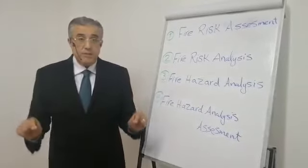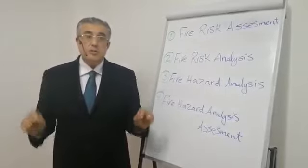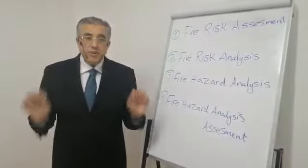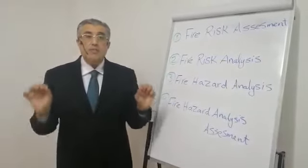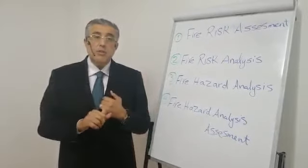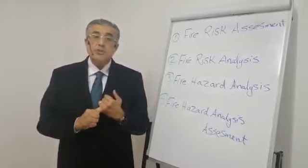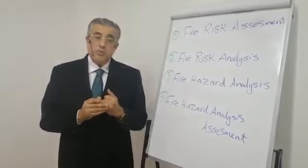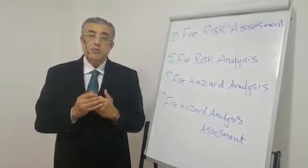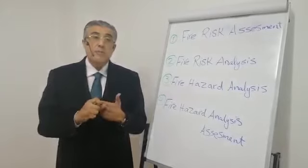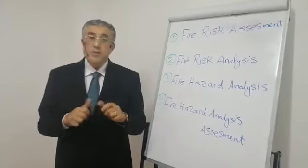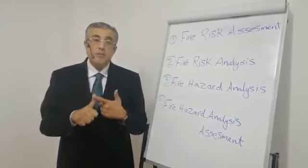We need to achieve and implement an efficient fire risk assessment. To achieve an efficient fire risk assessment, we have to identify six key points. Number one, you have to understand very well the perception of risk. Number two is the purpose of the fire risk assessment. Number three is the objective of the fire risk assessment. Number four is the method of fire risk assessment. Number five, elements of risk. Number six, and finally, the acceptance criteria.